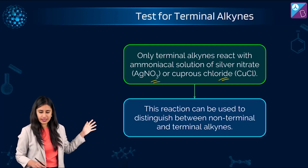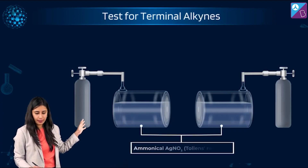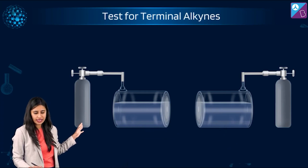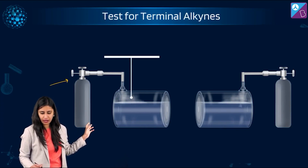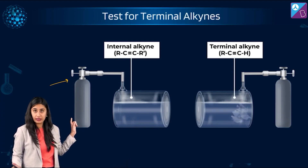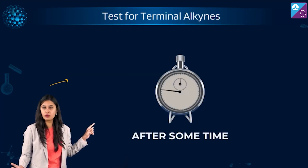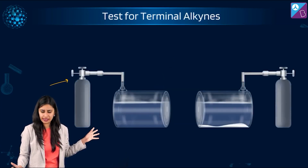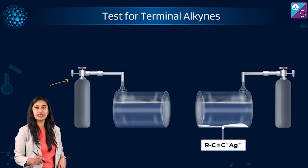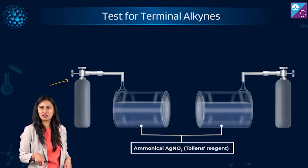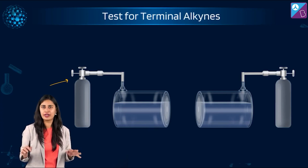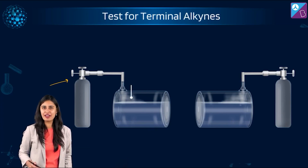Looking at the demonstration: ammoniacal silver nitrate — also called Tollens reagent — was added to two compounds. A gas came out upon opening. The first compound was a non-terminal alkyne, and the second was a terminal alkyne. The terminal alkyne gives a white precipitate with Tollens reagent, whereas the non-terminal alkyne gives no reaction.